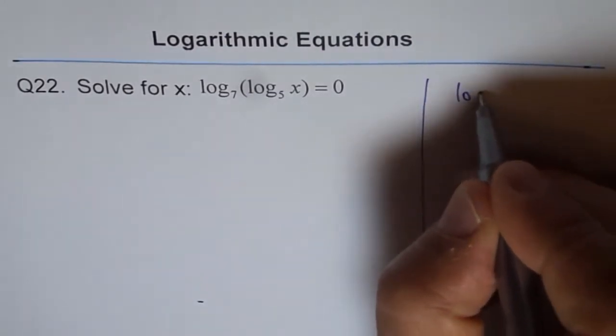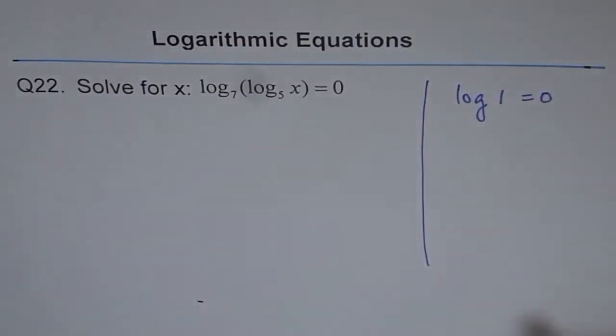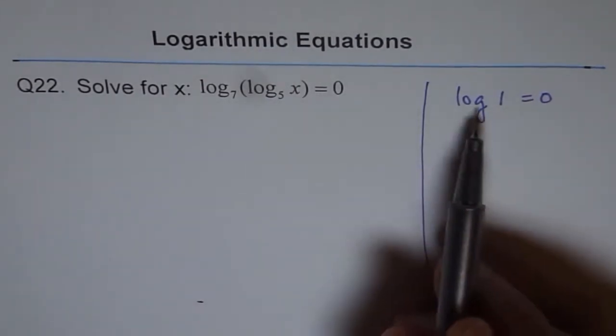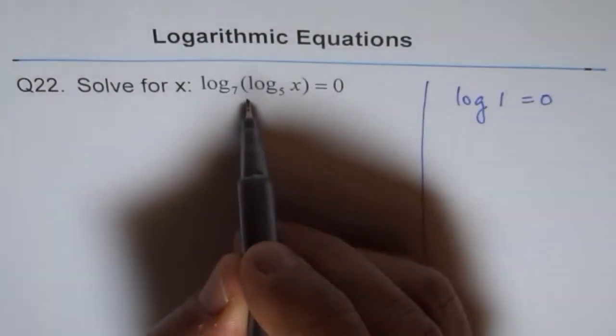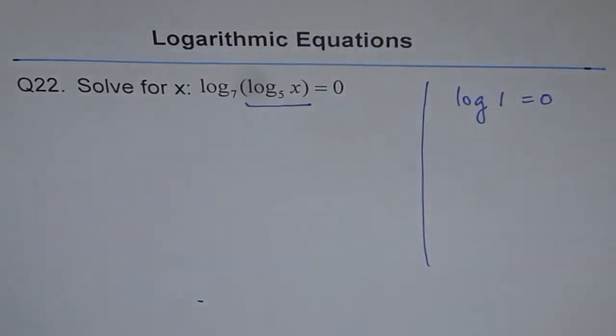We know log of 1 equals 0. That is our thinking. So if log of 1 is 0, that means this number here should be 1. Only then this equation is true.